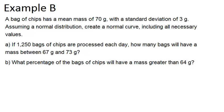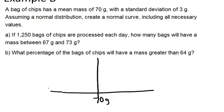Example B: a bag of chips has a mean mass of 70 grams with a standard deviation of 3 grams. Assuming a normal distribution, create a normal curve including all necessary values. So we'll make our normal curve. And I always like to draw in where the mean is. I know my mean is 70 grams and my standard deviation is 3. So I will fill in my curve. And make little tick marks to show where your standard deviations are.